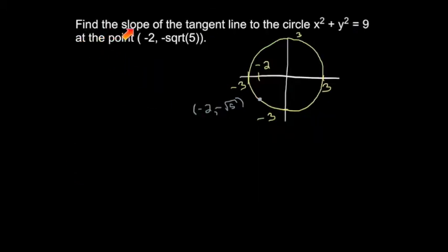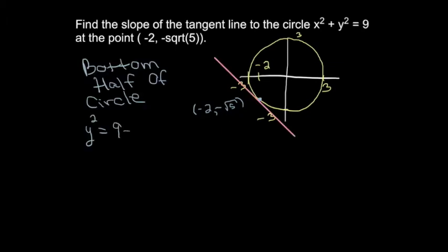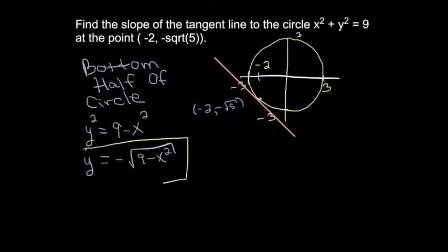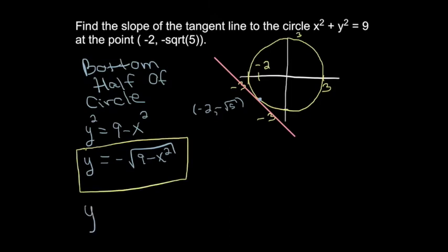Our task is to find the slope of the tangent line on a circle of radius 3 at the point negative 2, negative square root of 5. Since the point is on the bottom half of the circle, we'll use the equation for the bottom half. Remember that a square root is a one-half power, which makes taking the derivative easier.